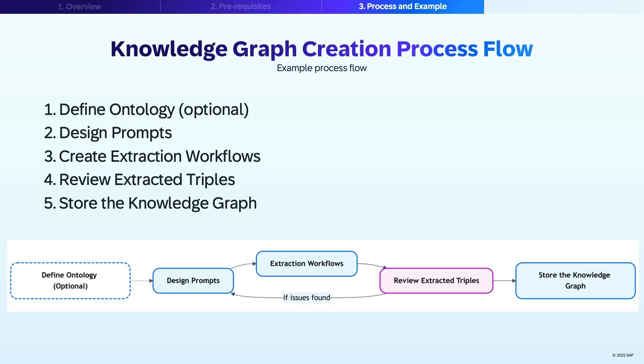This best practice is about creating a knowledge graph from a dataset. It can be, for example, a PDF file. Here are the process steps. First, define ontology. This is optional.